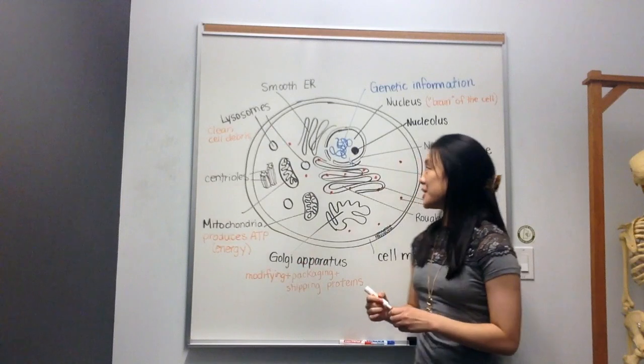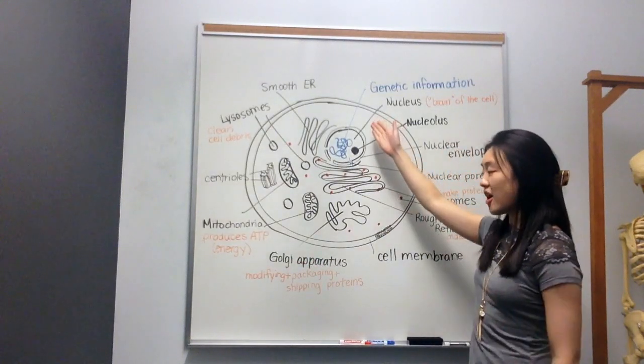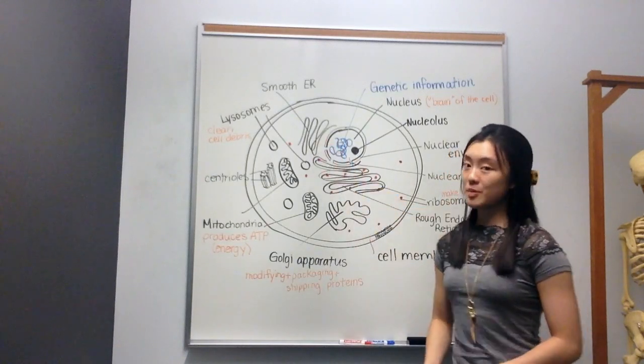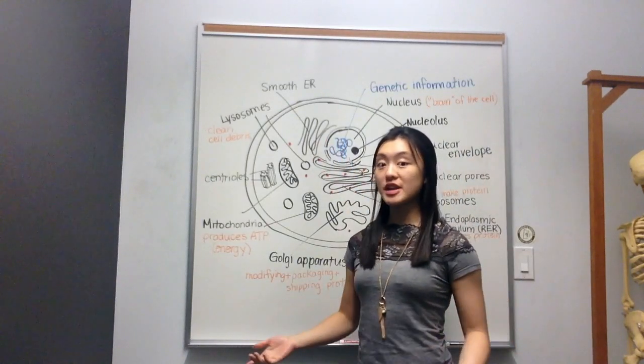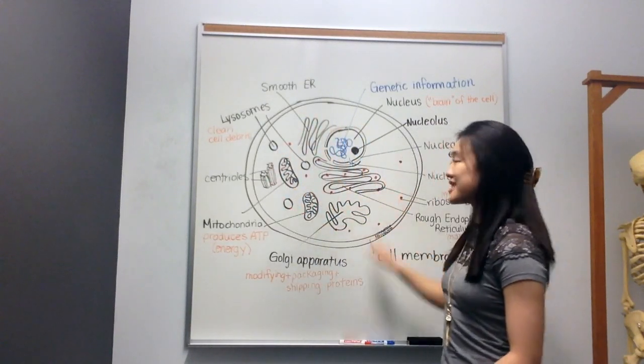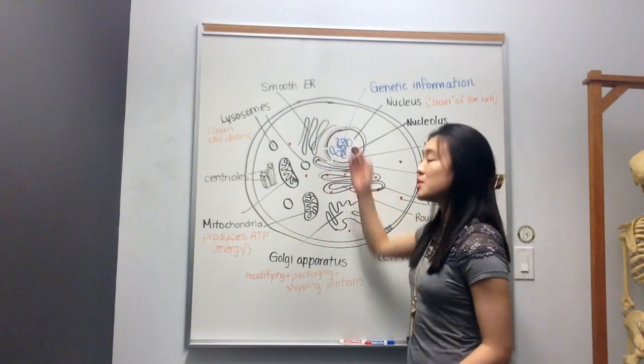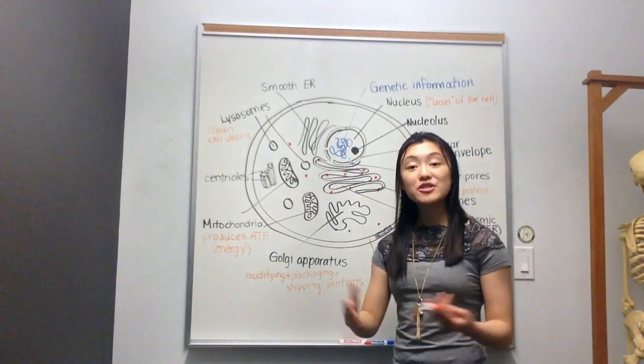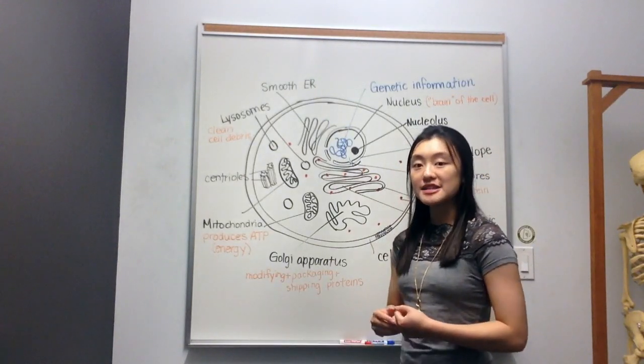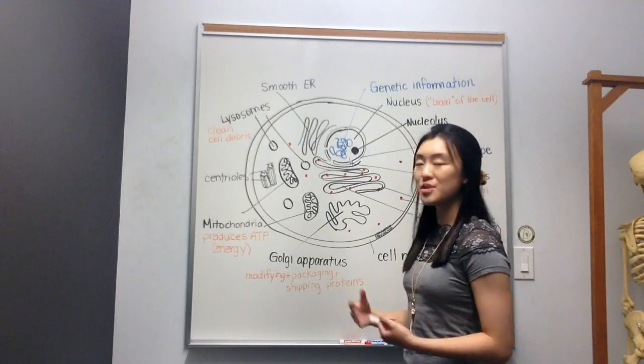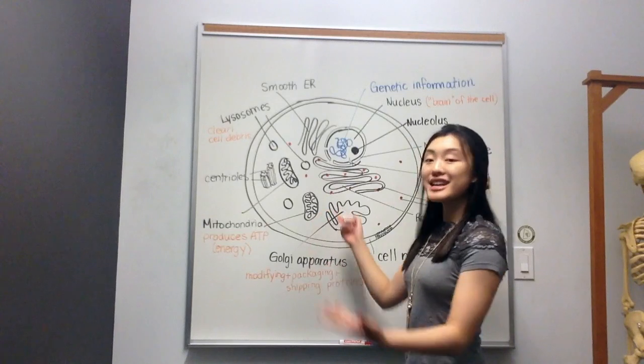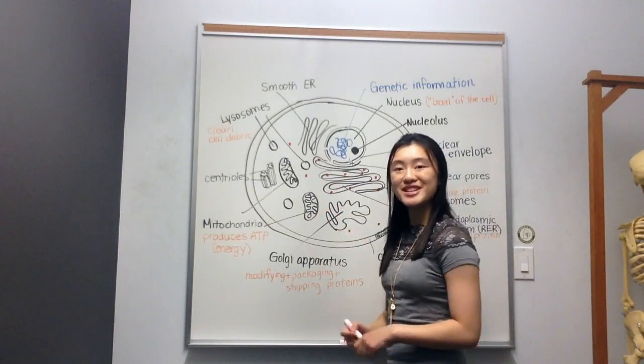Again, back to that city example. If the nucleus is city hall and the Golgi is playing the role of a post office, the lysosomes would be the pickup trucks for garbage. So what they would do is sort of drive around the cell, cruising around, and they're looking for waste. Let's say part of the smooth ER breaks off. It is now just waste floating around in the cell. The lysosome needs to pick up the cell debris, the remnants of the smooth ER, and then release it to the exterior of the cell. It's cleaning up the cell just like a garbage truck would.